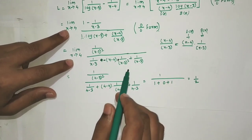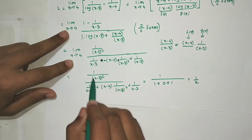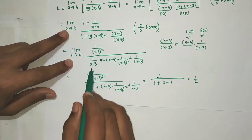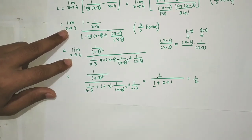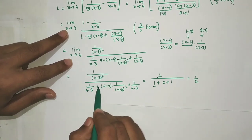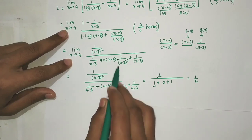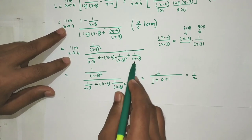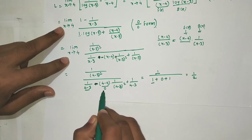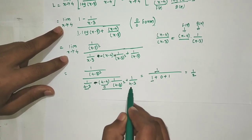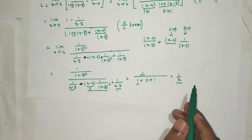So our final answer is 1/2. The numerator evaluates to 1 and the denominator to 2, giving 1/2.